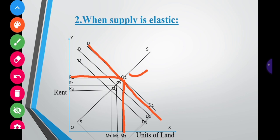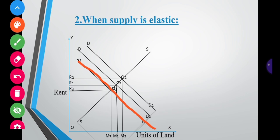At equilibrium Q2, both the demand and supply of land increase from M1 to M2. If due to some other reasons demand falls to D3, the new equilibrium point is Q3. At that point, the supply and demand for land decrease from M1 to M3, and rent also falls from R1 to R3. This is how rent is determined in the Modern Theory of Rent.